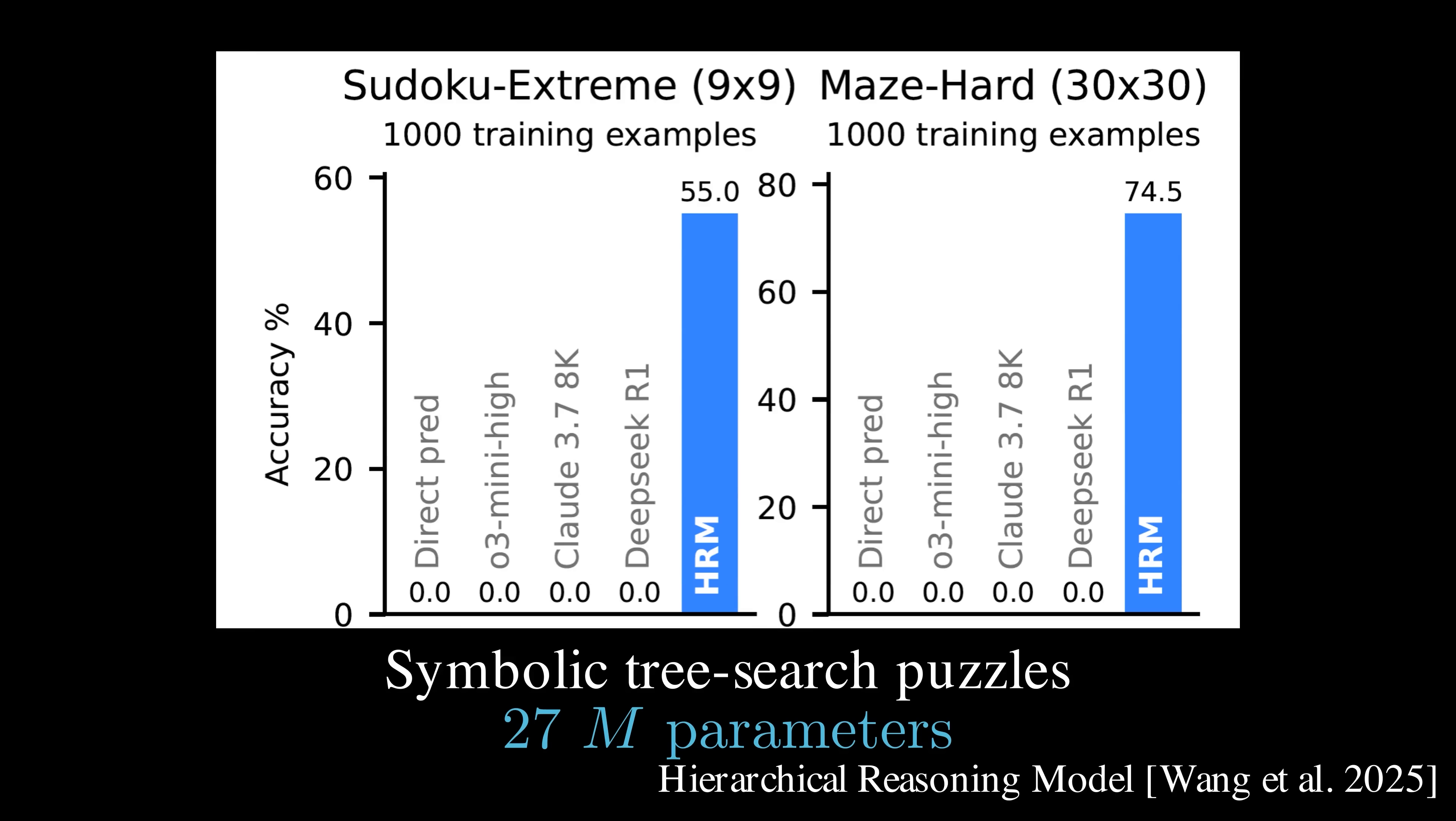What's even more impressive is that this hierarchical reasoning model achieves this with just 27 million parameters. Yes, that's an M for million, not a B for billion.